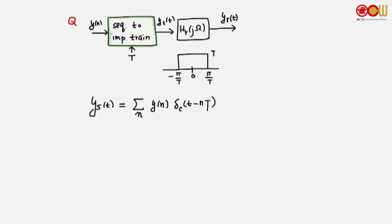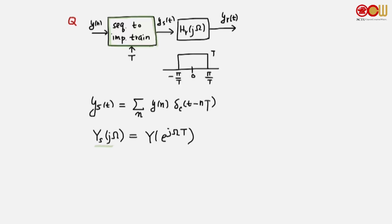How can we answer such a question? There are two steps here: one is sequence-to-impulse-train, and one is filtering by h_r. Let's recall the result from earlier. When a sequence and an impulse train are related, we know how Y_s(jΩ) and Y(e^jω) are related. This is the Fourier transform of the impulse train, and this is the Fourier transform of the discrete-time sequence y[n].